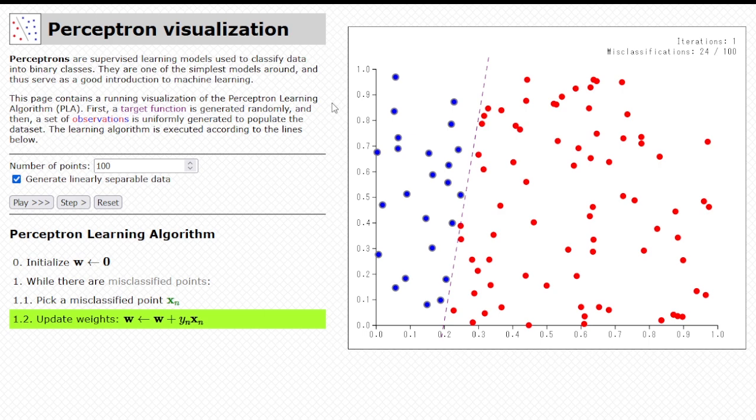So, we have updated the weights, like in the pseudocode. So, let's step one more time. The while check is still true, because there are still misclassified points, as we can see. We can step once more. We can see that another misclassified point was selected, a different one. We can update the weights towards it, and the perceptron moves.